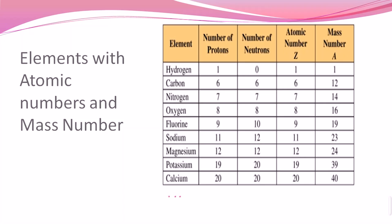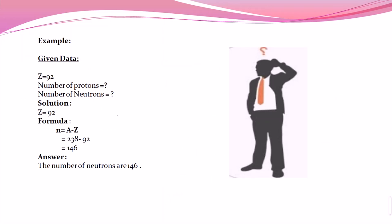Here is a table representing a few elements showing their proton number, neutron number, atomic number, and mass number. Hydrogen has one proton and no neutrons, so atomic number is one and mass number is one. Carbon has six protons and six neutrons — atomic number six, mass number twelve. Nitrogen has seven protons and seven neutrons — mass number fourteen. Calcium has twenty protons and twenty neutrons — atomic number twenty and mass number forty.